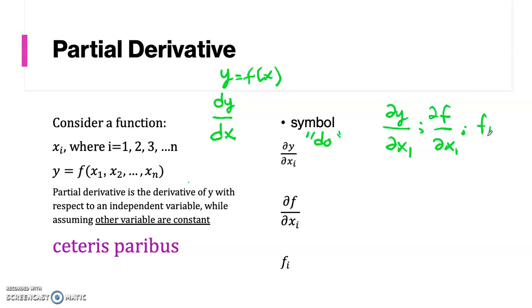Or we can write it as dou f over dou x1, or just simply f1. Dou f over dou x2, deriving with respect to x2, or we can also write it as f2.